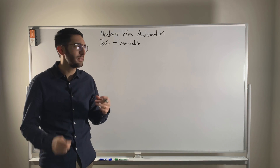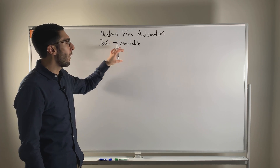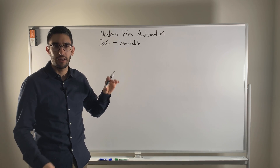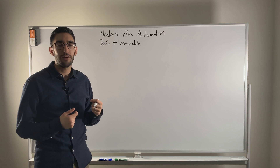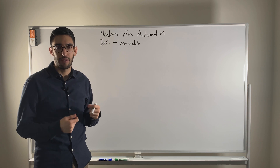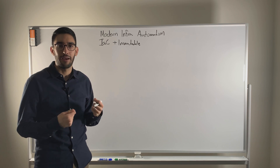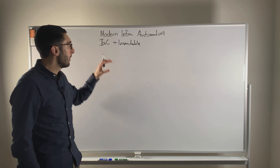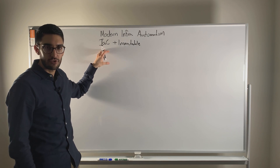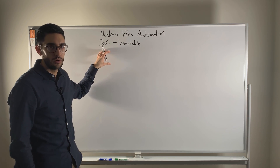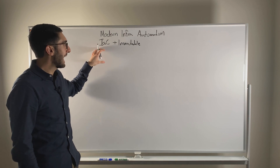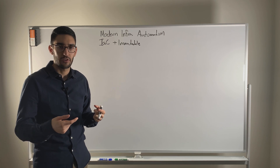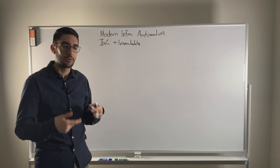If we zoom out, why do we care about these two approaches? Really it's about how do we manage complexity, how do we manage risk, and how do we go quickly? By virtue of capturing things as infrastructure as code, now we can automate the standup and provisioning of that infrastructure, and so that allows us to go a lot faster.